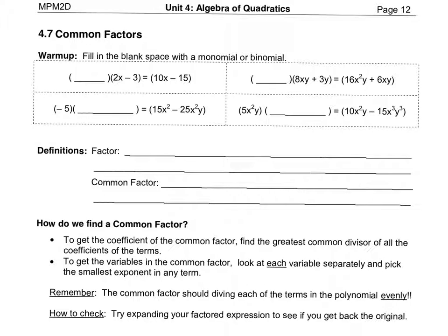We're looking at how to common factor. For a warm-up, I want you to fill in the blank space with a monomial or a binomial — not with you writing your name. In this blank space you're going to put what you think you would need to multiply the 2x and the minus 3 by in order to get the given answer.